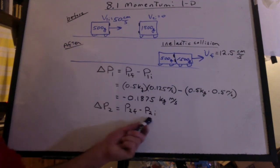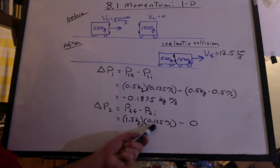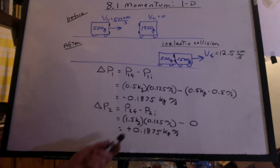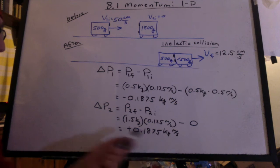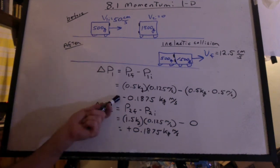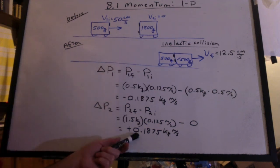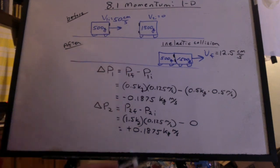What's the change in momentum of the large cart? The same idea here for the second cart. And we have the final momentum minus zero, because the initial momentum is zero. And we get a positive 0.1875 kilogram meters per second. So what does this mean? It means this cart lost that much momentum. This cart gained the same amount. It's the same idea as conservation of momentum. Whatever this one lost, that one had to gain, because the system must retain the same amount of momentum.